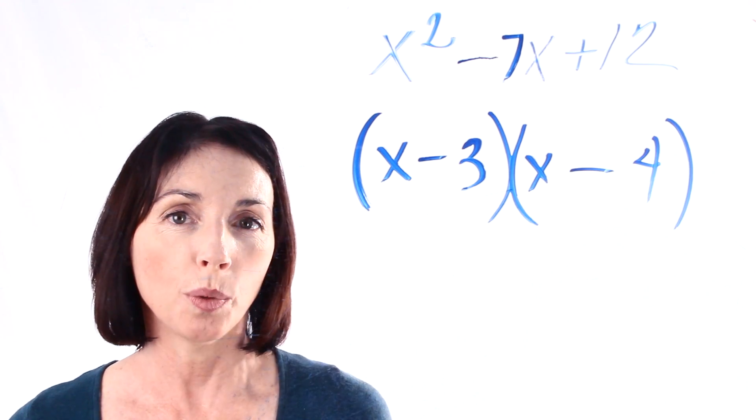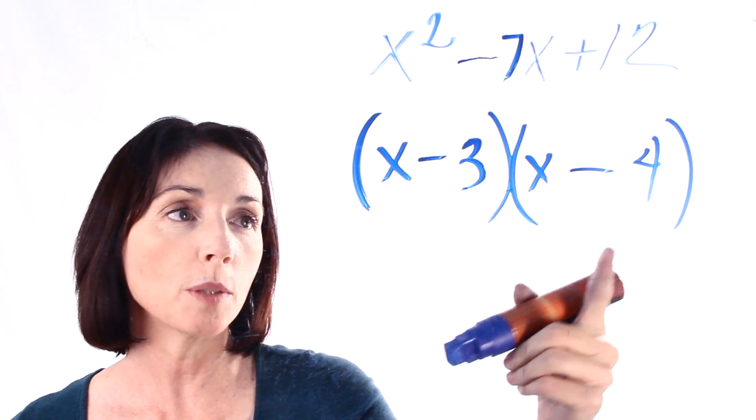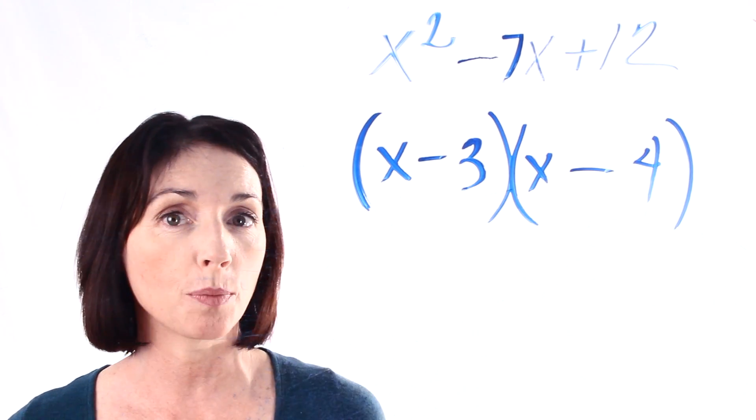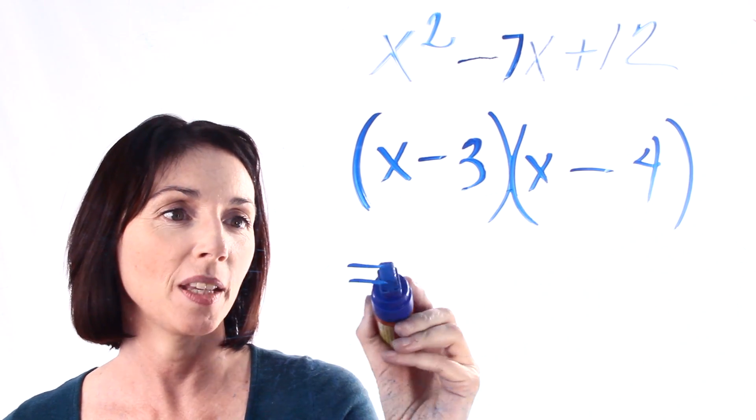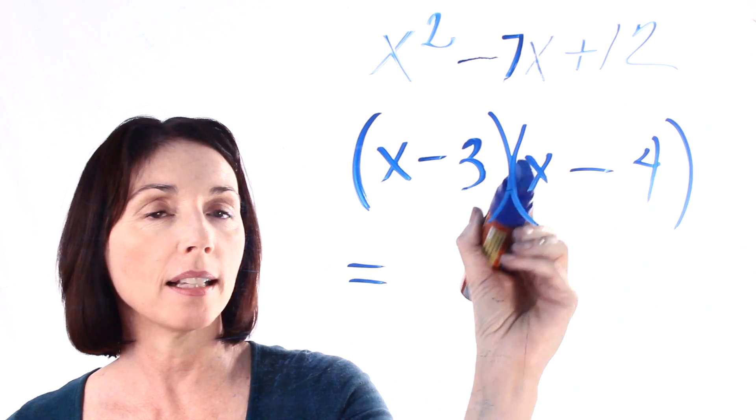Now let me show you why this works. We'll use the FOIL method to multiply this back out and make sure that our expression looks the same. So x times x is x squared.